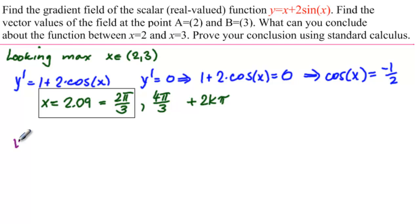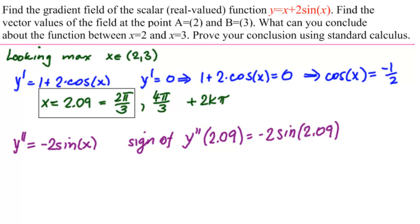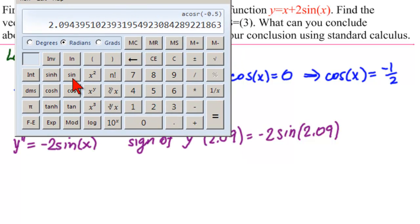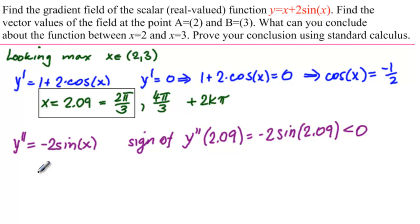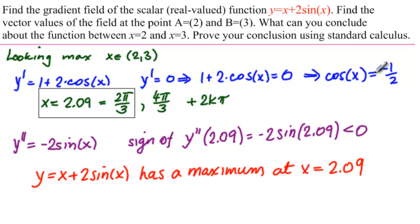We haven't yet seen that it's a max. All we've done is seen that it's a stationary point. How do we see that it's a max? We take the second derivative, which would be minus 2 sine of x. So now we want to know y double prime of 2.09, which is minus 2 sine of 2.09. Let's see what it is. So the sine of this, it's positive times that minus 2. So it's less than 0. So indeed, the function y equal to x plus 2 sine of x has a maximum at x equal 2.09.